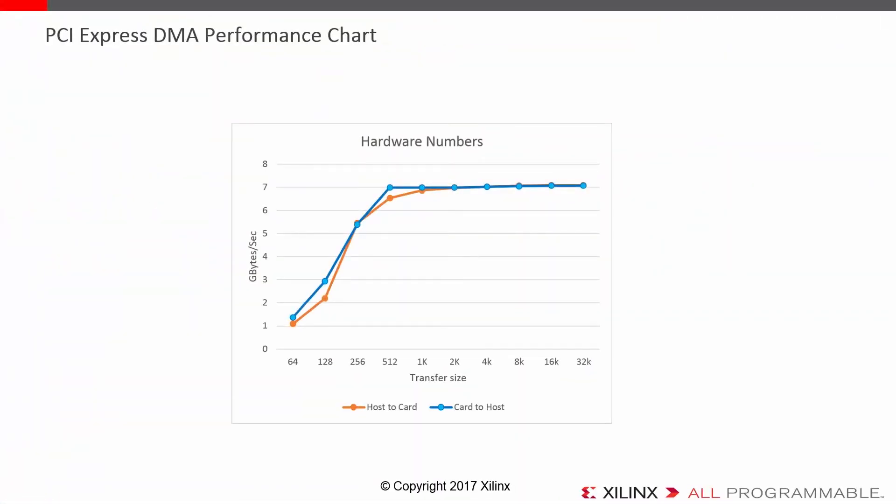Here we see the hardware performance chart again. The way we get this chart — and pretty much everybody else who shows a chart like this — is we create a string of descriptors in a ring. The operating system never becomes involved when we measure these hardware numbers. This is great for showcasing the performance DMA engines can achieve and for verifying the DMA engine can handle any type of data thrown at it, but it doesn't give designers an idea of what kind of numbers they can expect in their real designs.